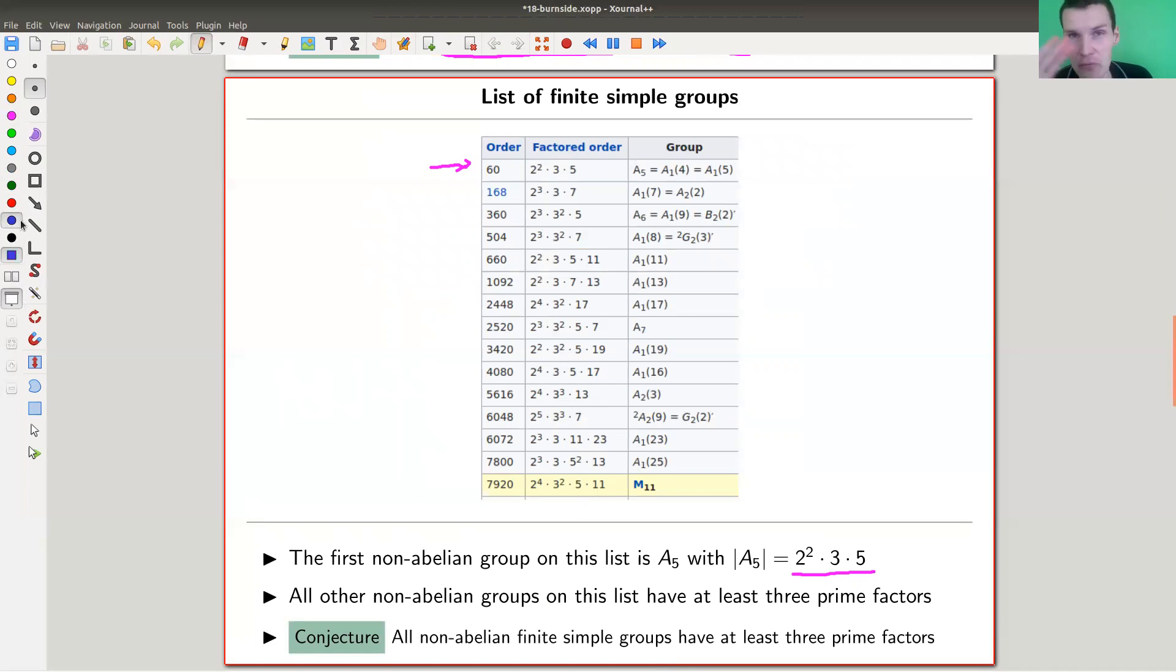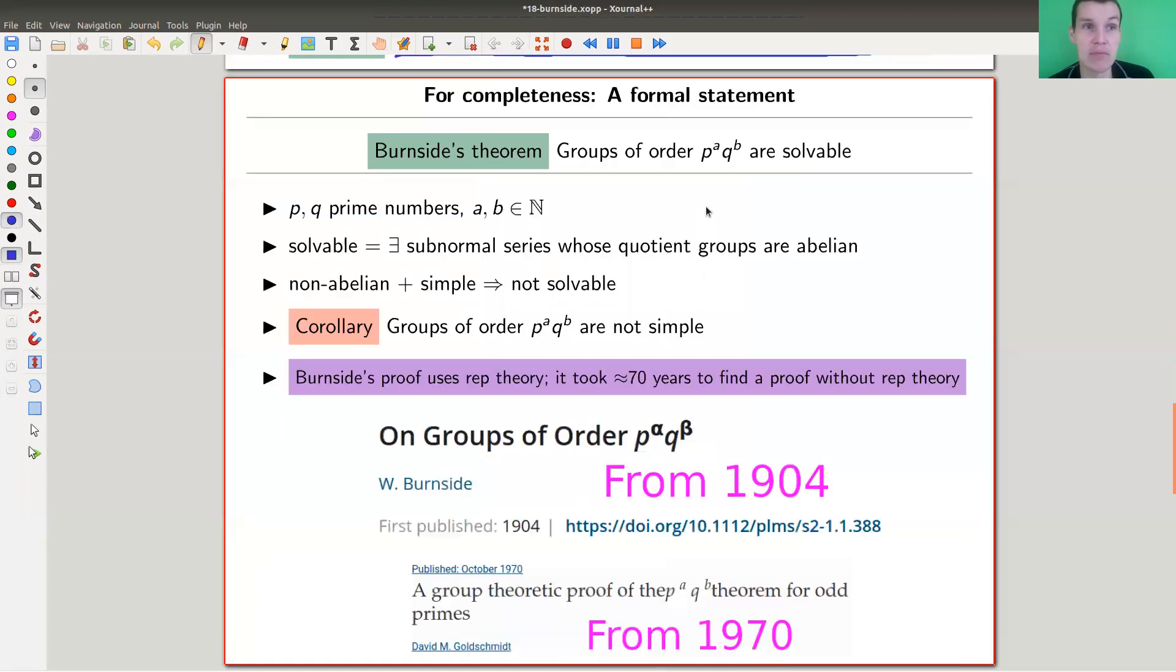and that's what Burnside conjectured long ago, that all non-abelian finite simple groups have at least three prime factors—something like 2×3×5 or 7×11×13. You never have a group of order 5×7 to be simple.